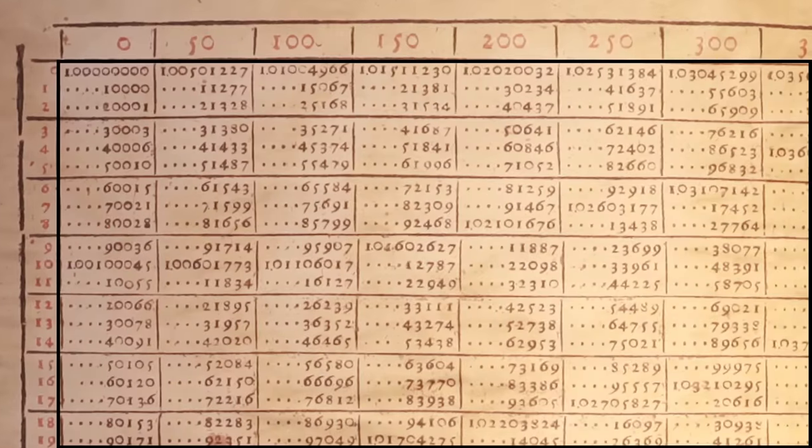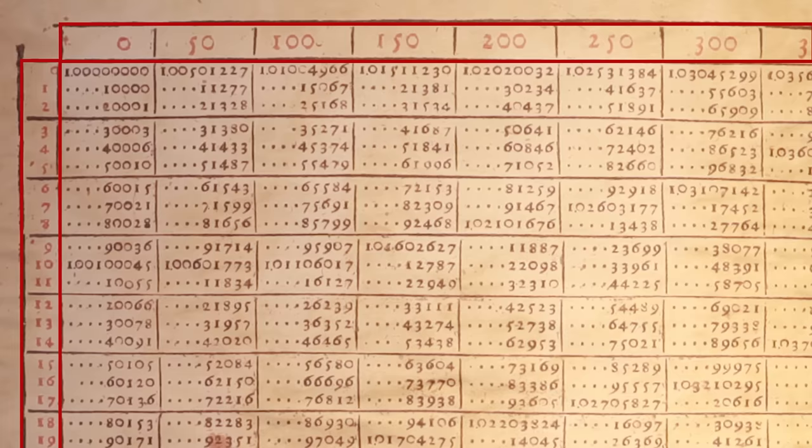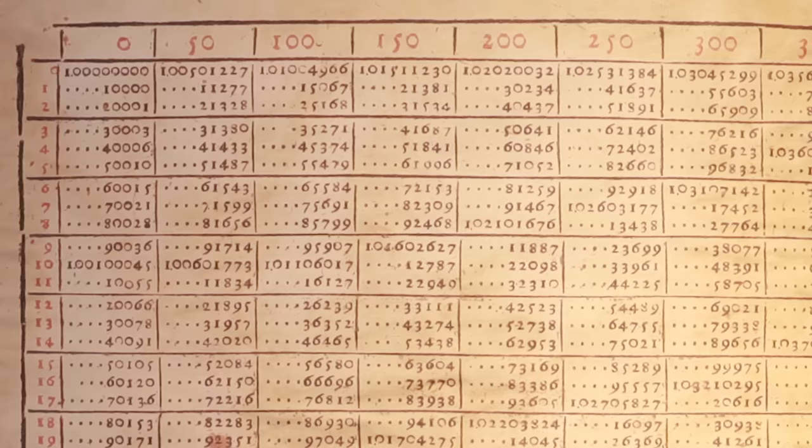Berge called these numbers black numbers. Each black number has a corresponding red number, which indicates how many times 1.0001 was multiplied together to compute the given black number.